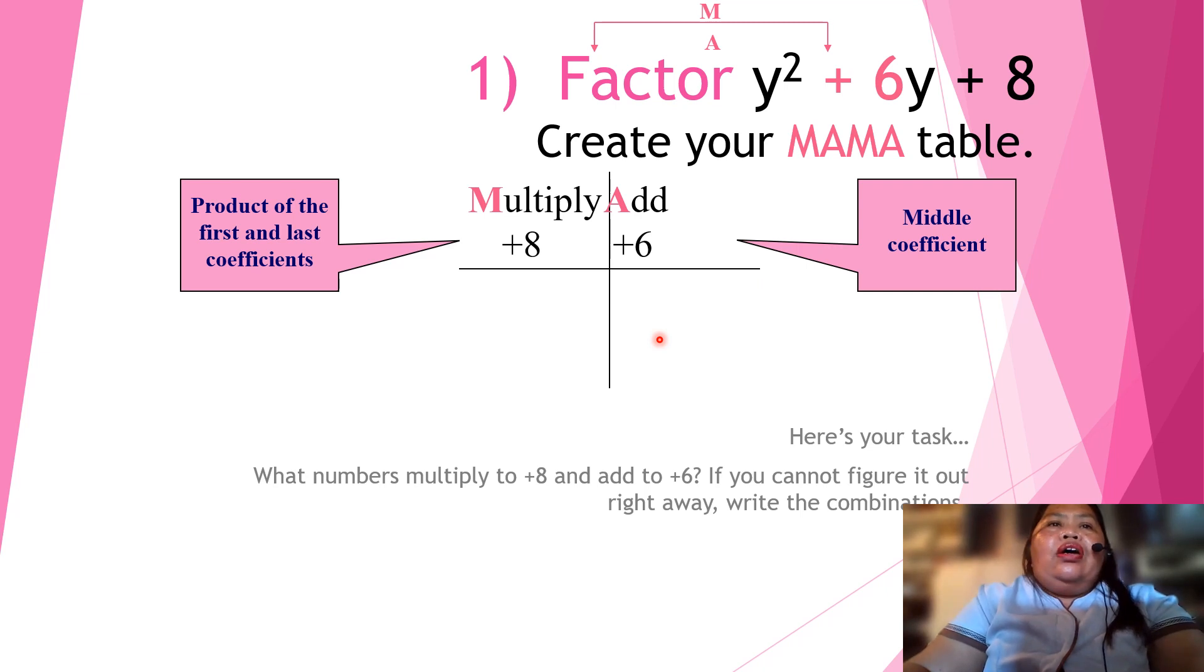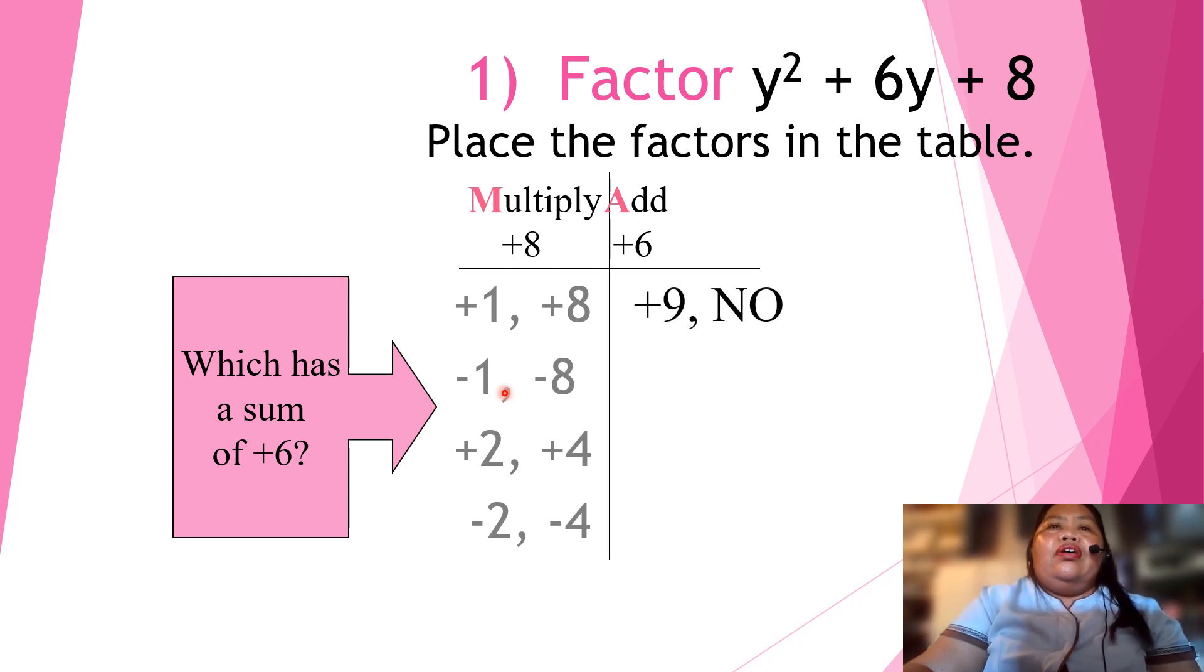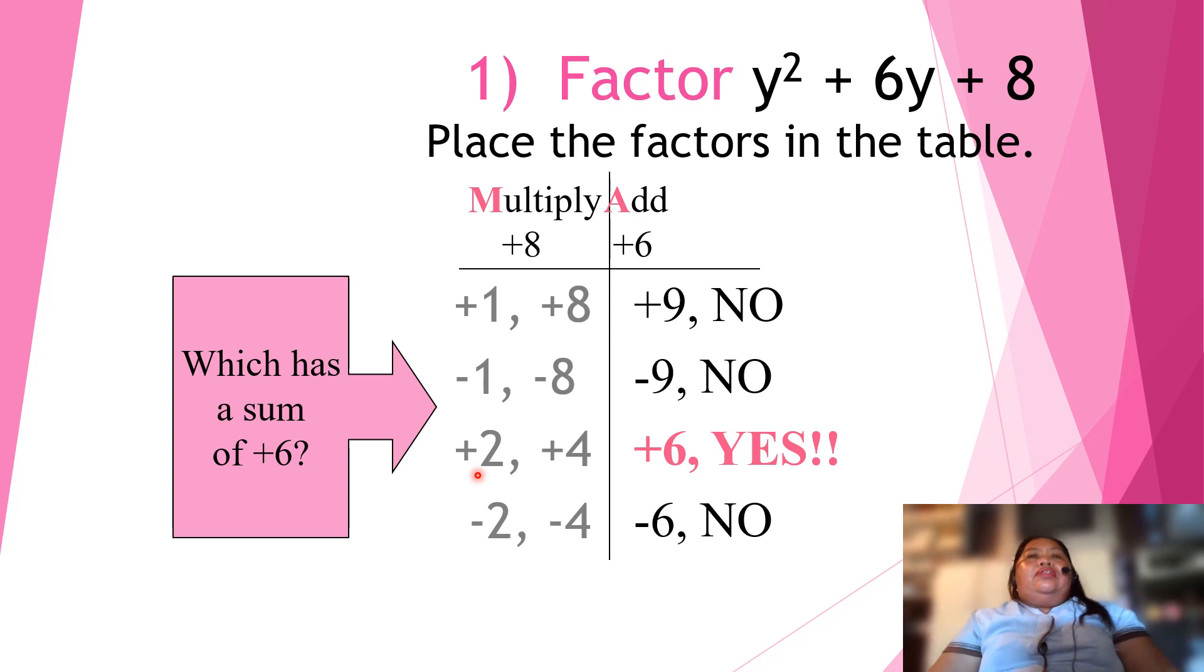So, here's your test. What numbers multiply to positive 8 and add to 6? If you cannot figure it out right away, write the combinations. So, we have 8 times 1. If we are going to add that, you will get negative 1 and negative 9. Also, these are the multiples or the factors of 8. Negative 2 and 4 will get you to also 8. So, which has a sum of 6? Of course, 9, no. Negative 9, no. And positive 6, yes. And negative 6 is no. So, we have only positive 6. So, that means our factors are 2 and 4 to get the 6.